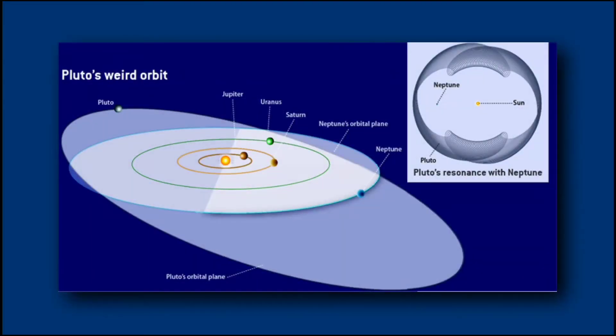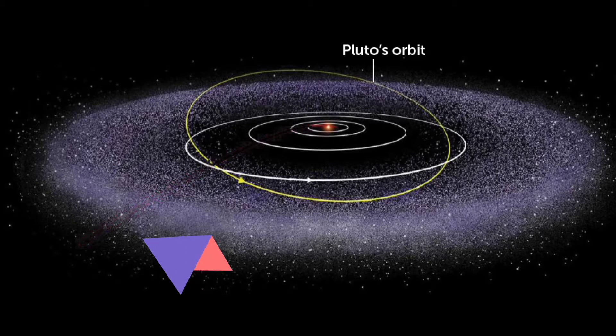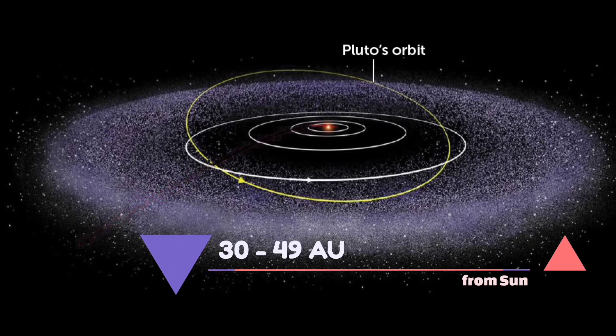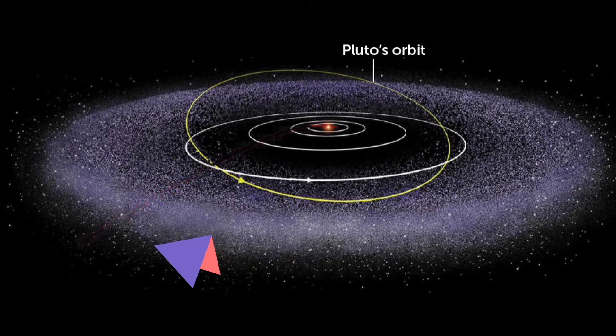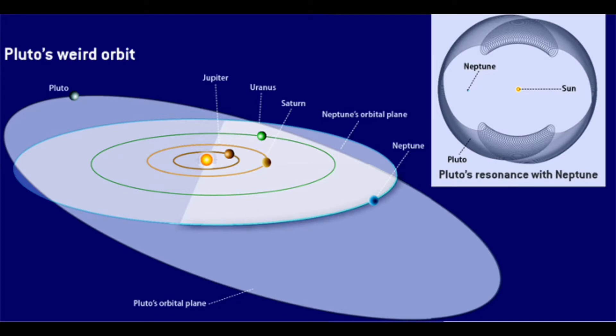Pluto has a moderately eccentric and inclined orbit ranging from 30 to 49 astronomical units from the Sun. Therefore, Pluto periodically comes closer to the Sun than Neptune. Now, a doubt would arise: Why did Neptune and Pluto not collide? They do not collide because their orbital resonance with Neptune prevents them from colliding.